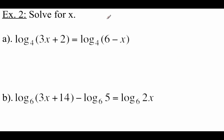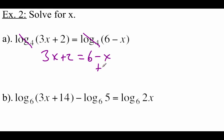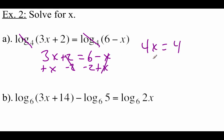A couple more one-to-one property examples. We've got log base 4 of (3x plus 2) equals log base 4 of (6 minus x). Since these are both base 4 logarithms, I'm going to cross those things out. So we've got 3x plus 2 equals 6 minus x. I'm going to add this x over to the left-hand side and subtract the 2 at the same time. We get 4x equals 4. Divide both sides by 4 and we get an x value of 1.